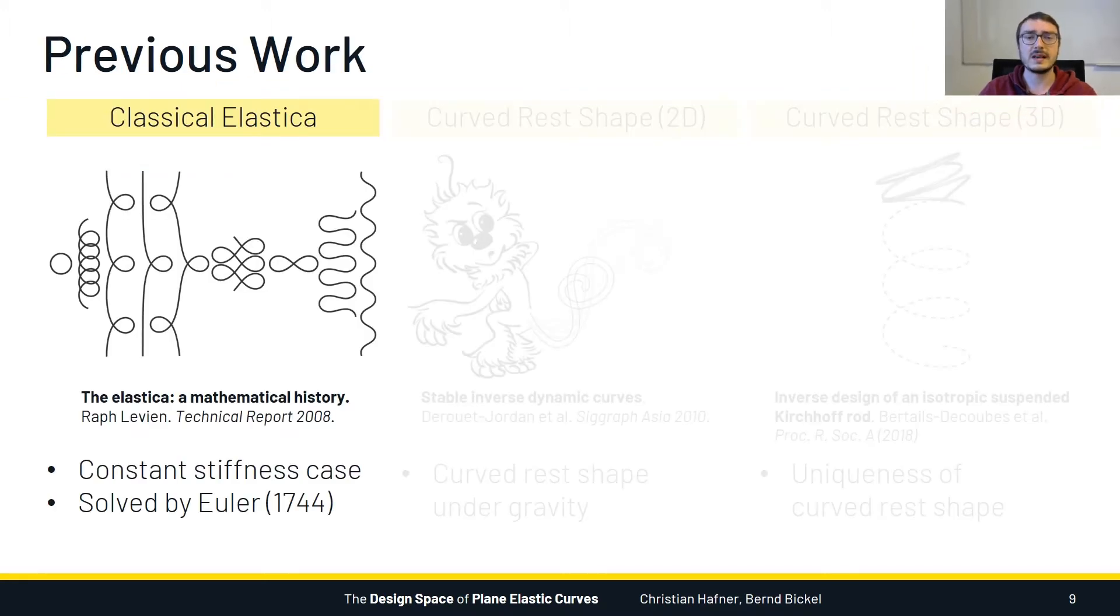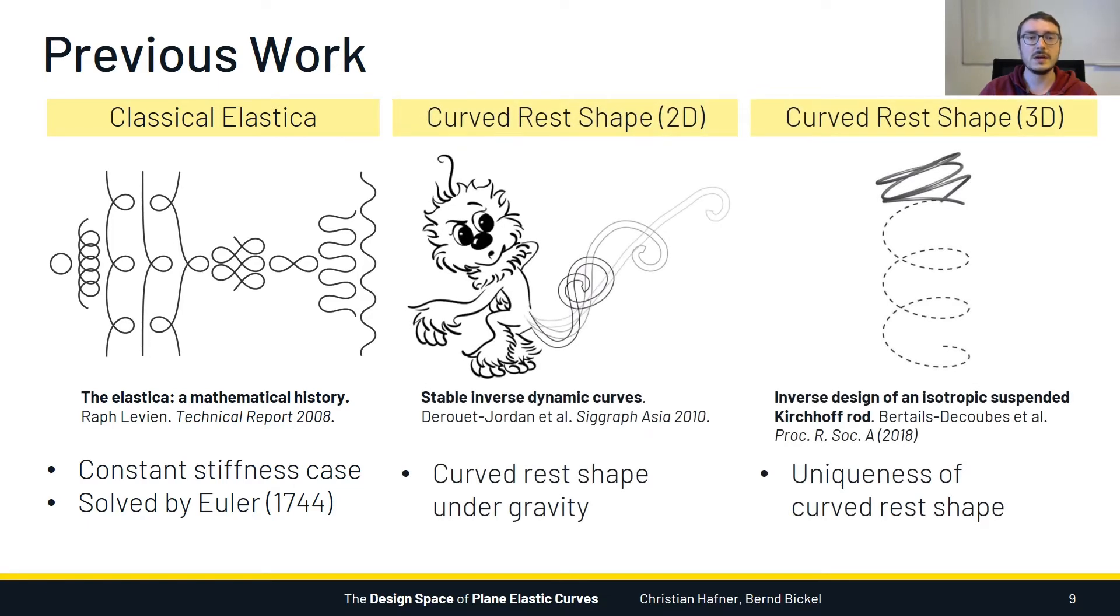There is one famous classical work related to this question, which treats the case of constant stiffness. It was Euler who first characterized all curves that can result from bending an initially flat beam. But what we are interested in is a generalization to the case of arbitrary stiffness profiles. More recently, there has also been work on the design of beams with a curved rest shape. In contrast to these works, we are interested in flat rest shapes, because this is what makes active bending economically attractive.